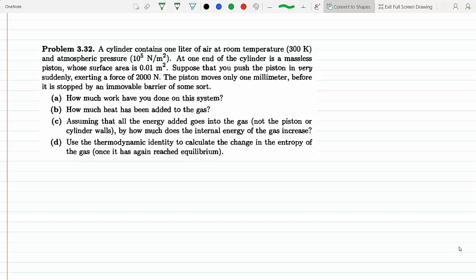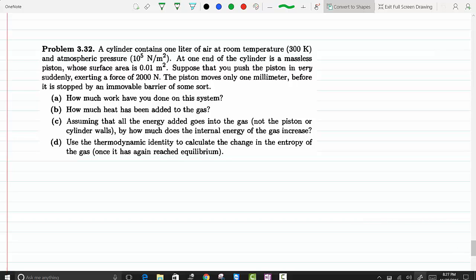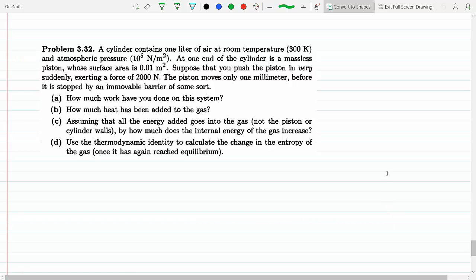A cylinder contains one liter of air at room temperature (300 Kelvin) and atmospheric pressure (10 to the fifth). At one end of the cylinder we have a massless piston whose surface area is 0.01 m². Suppose you push the piston very suddenly - very suddenly, that means that's a key word for an adiabatic compression. This means we have adiabatic compression, meaning there is no exchange of heat between the surrounding and the system.